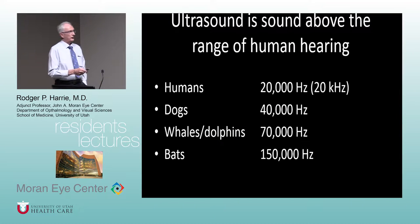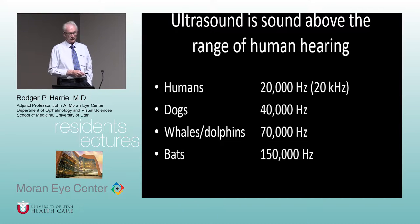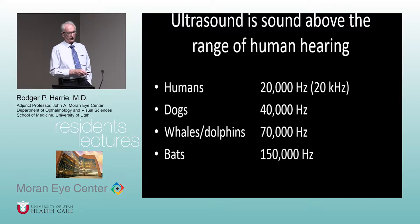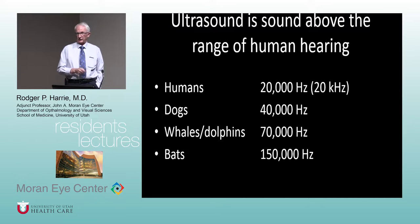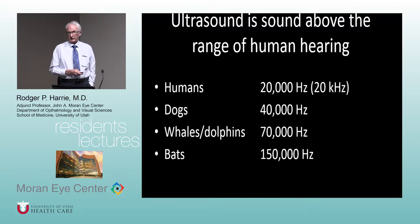Ultrasound is defined as sound above the range of human hearing. We hear up to about 20 kilohertz. Dogs can hear up to 40, whales and dolphins up to 70, and bats up to 150. But we're still far below what we use for diagnostic ultrasound — we're in the megahertz level. The standard probes I use are 8 to 10 MHz, going up to 50 or 60 with UBM — so very high frequency.